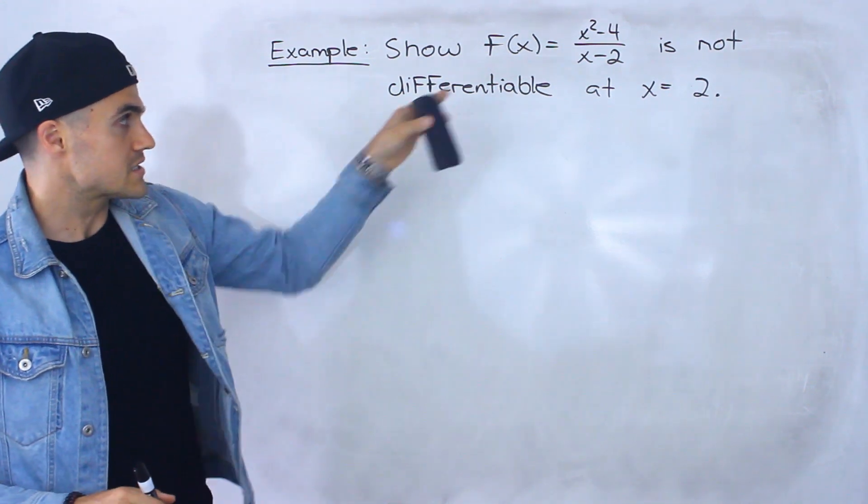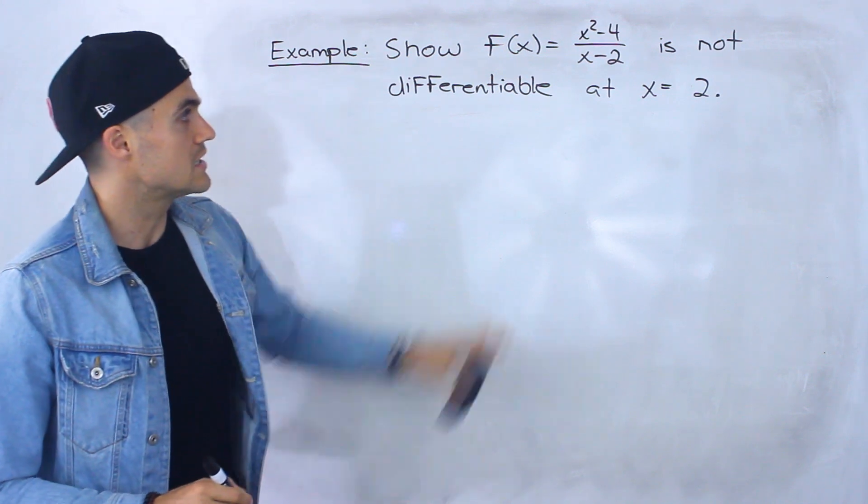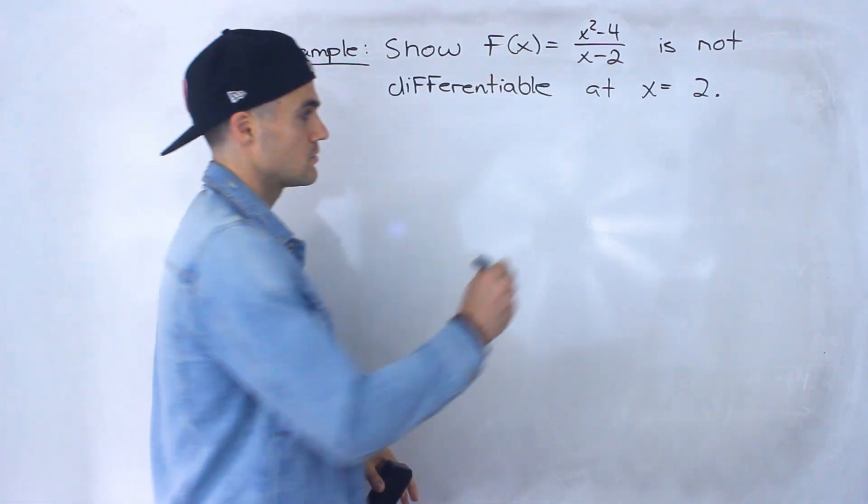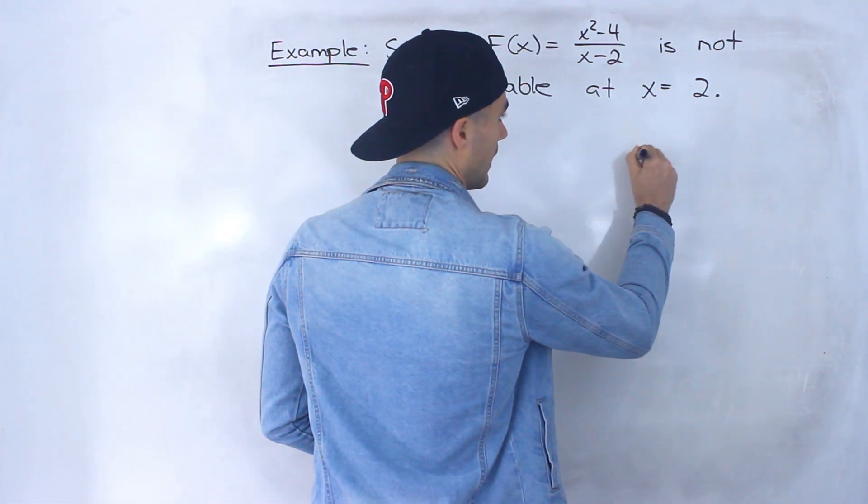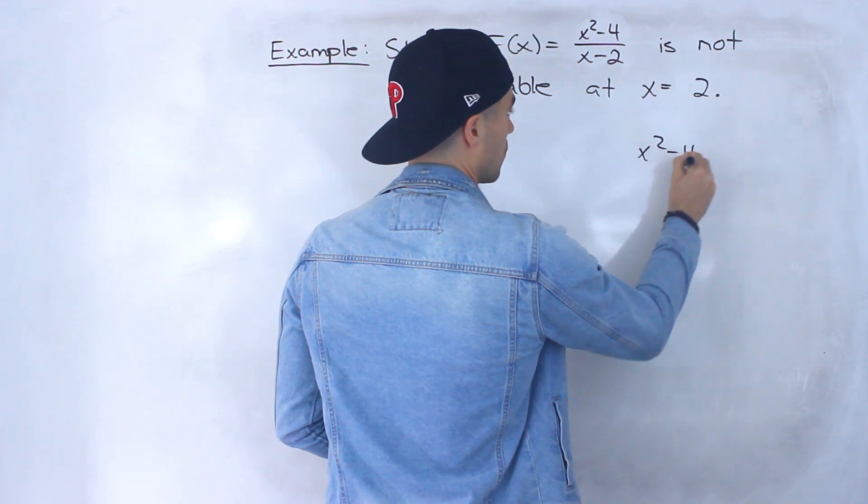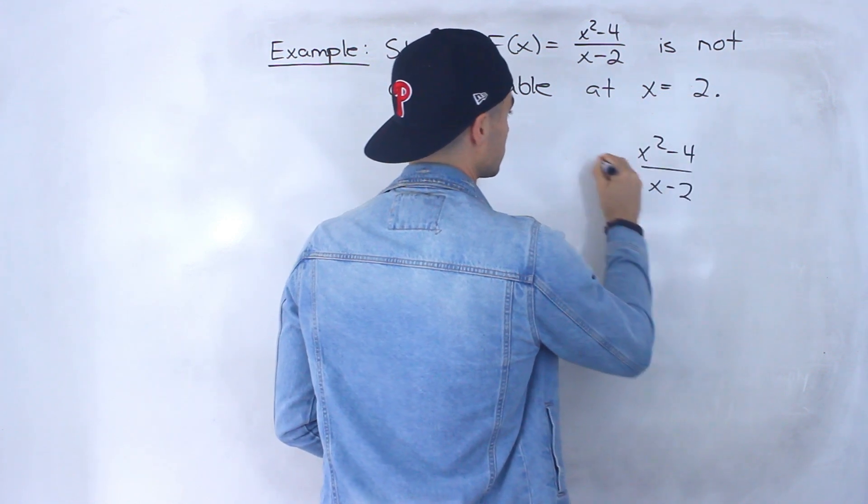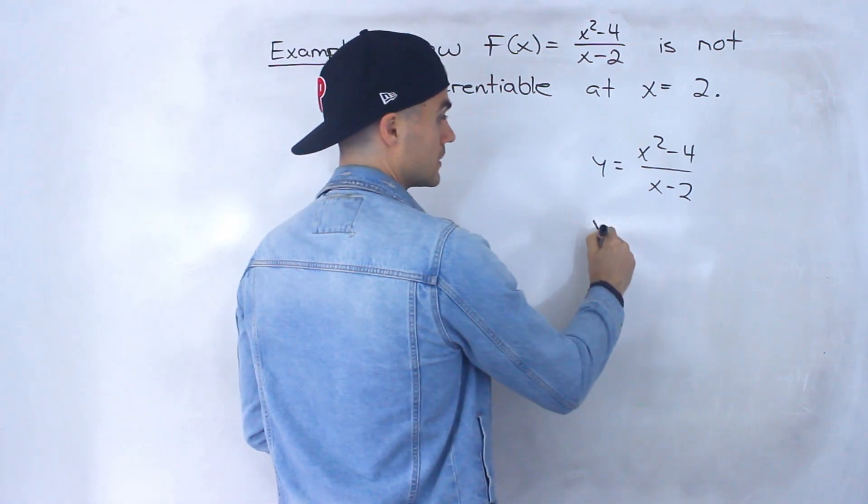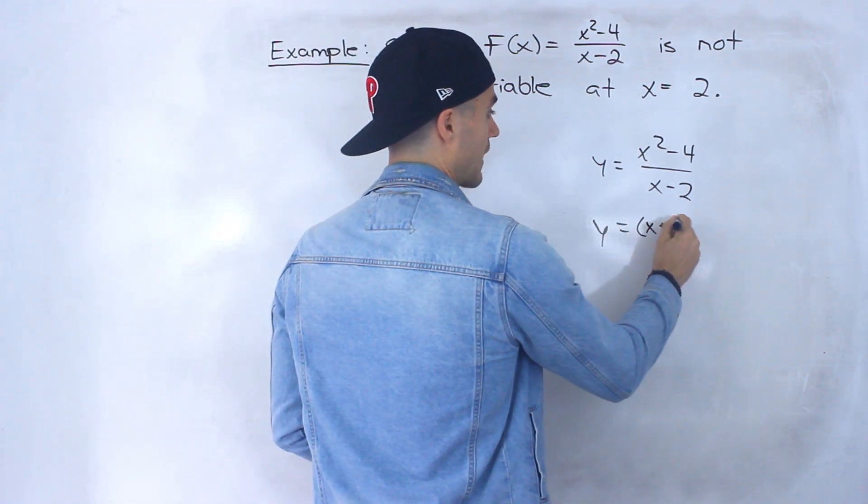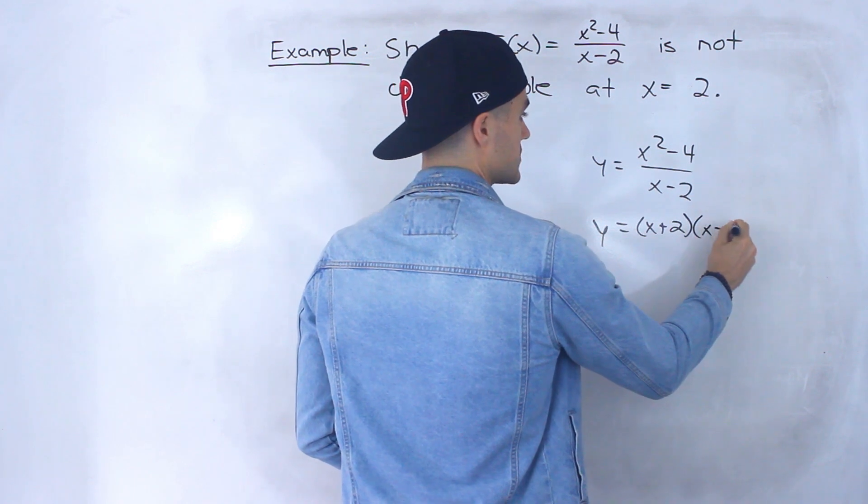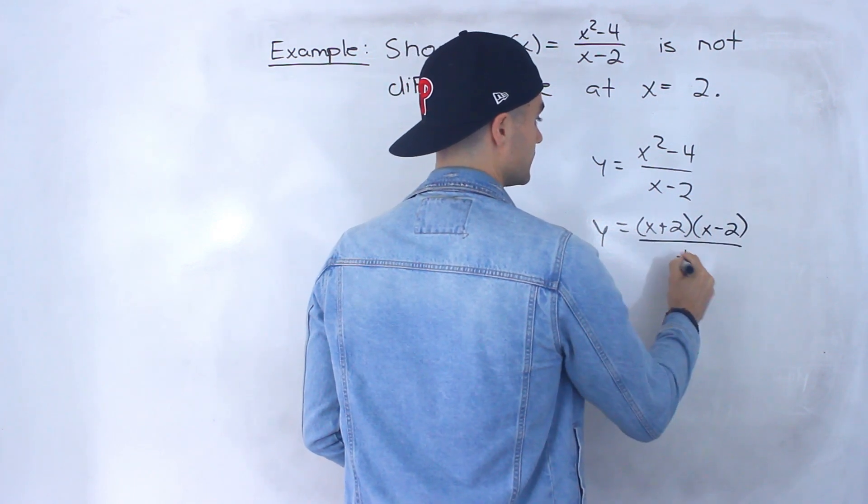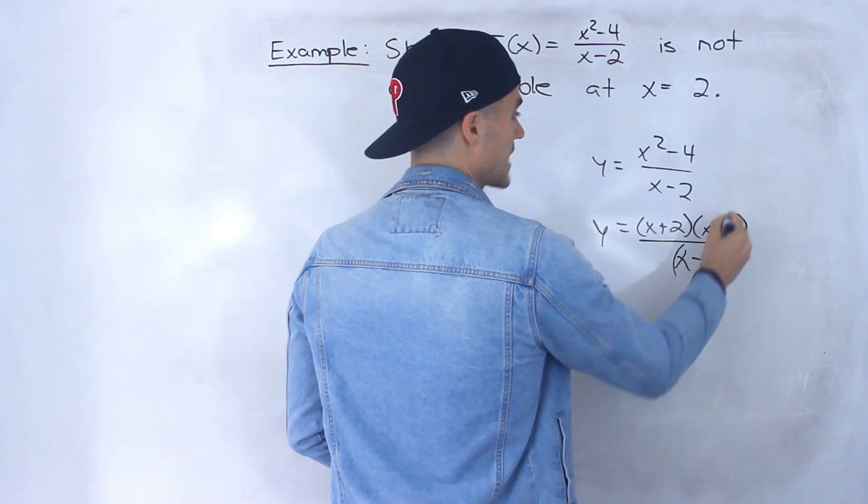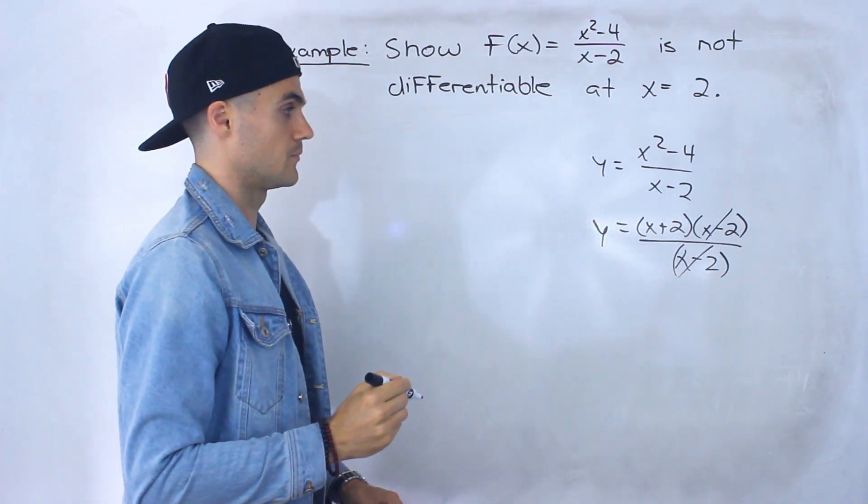So for this example here first thing I'm going to do is I'm going to graph this. Notice that x squared minus 4 over x minus 2, we can simplify this so we could factor the top, that's a difference of squares, and notice that an x minus 2 factor will cancel out.